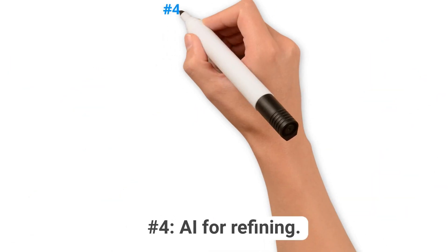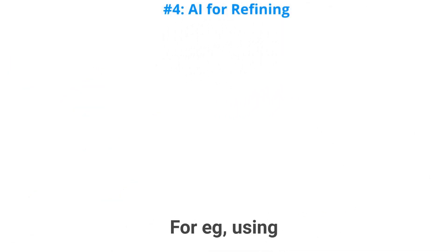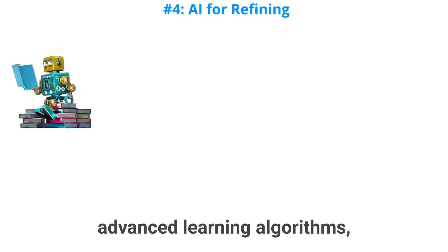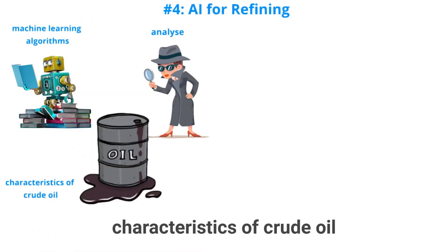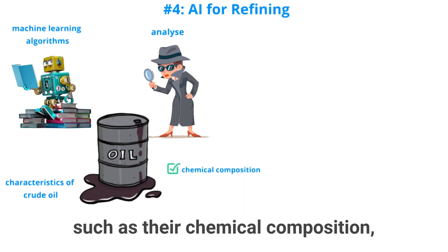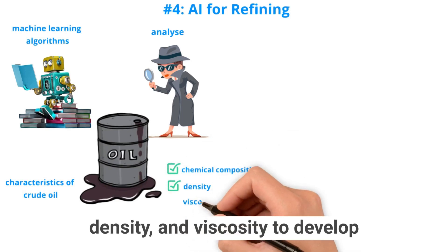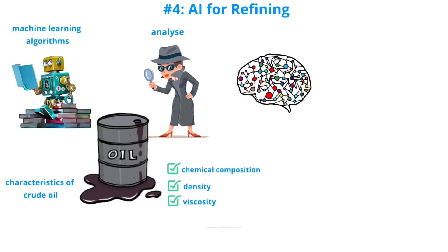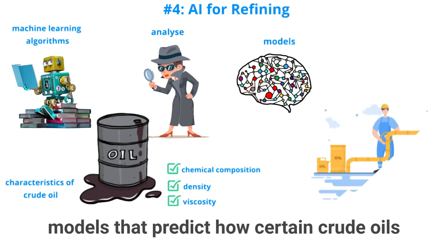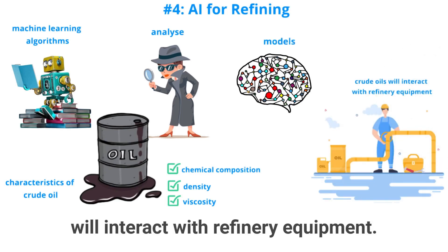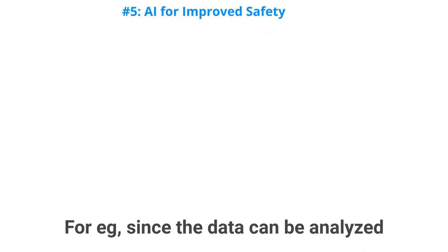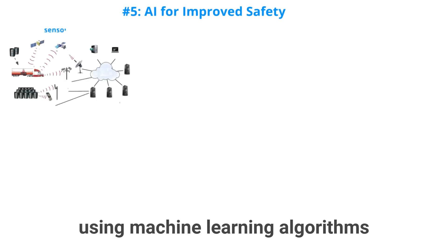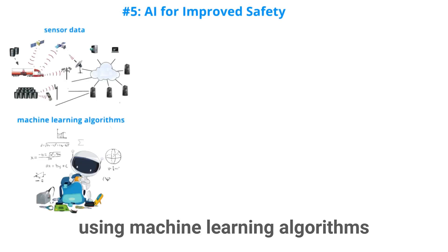Number four: AI for refining. For example, using advanced machine learning algorithms we can analyze detailed characteristics of crude oils — such as their chemical composition, density, and viscosity — to develop models that predict how certain crude oils will interact with refinery equipment.